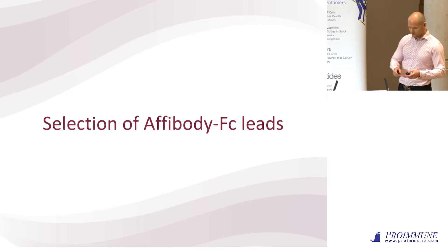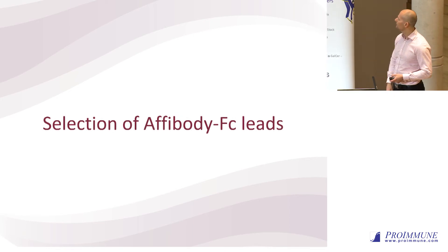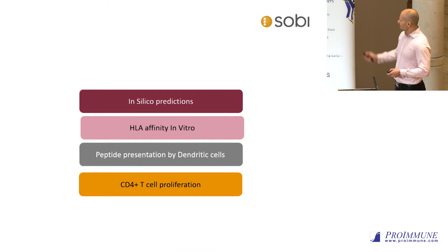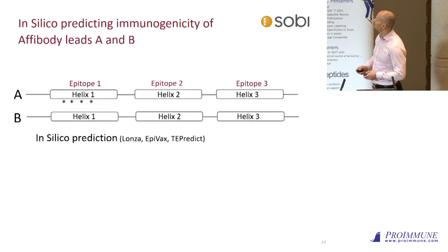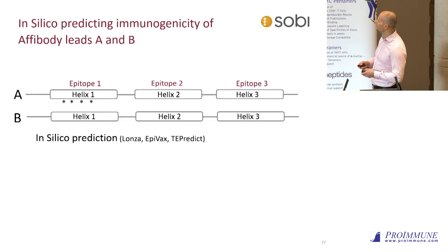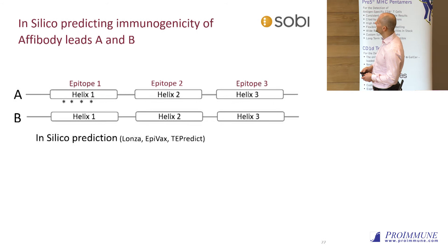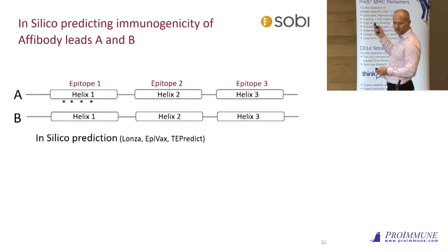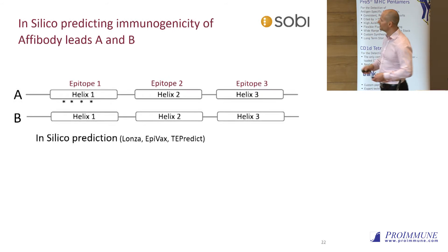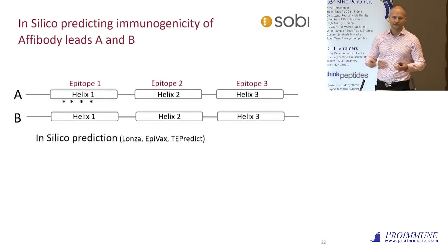Now some of our data — what do we actually see when we apply these methods to the Affibody FC platform? Starting with in silico predictions, here we have an example of two leads. These were very late leads, late down in the screening funnel, and they're directed to the same target. They differ by only four amino acids in the first helix — this is only the Affibody part. We also have the FC part, and of course we have peptides presented from FC as well, which could be potential T-regitopes.